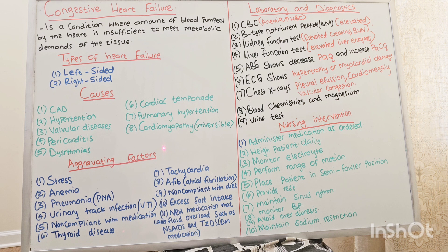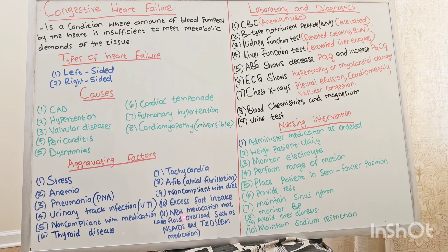Now let's talk about aggravating factors of CHF: stress, anemia, infection such as pneumonia and urinary tract infection, non-compliance with medication, thyroid disease, tachycardia, A-fib, non-compliance with diet, excess salt intake, and new medications that cause fluid overload such as NSAIDs and TZDs, which are diabetic medications.